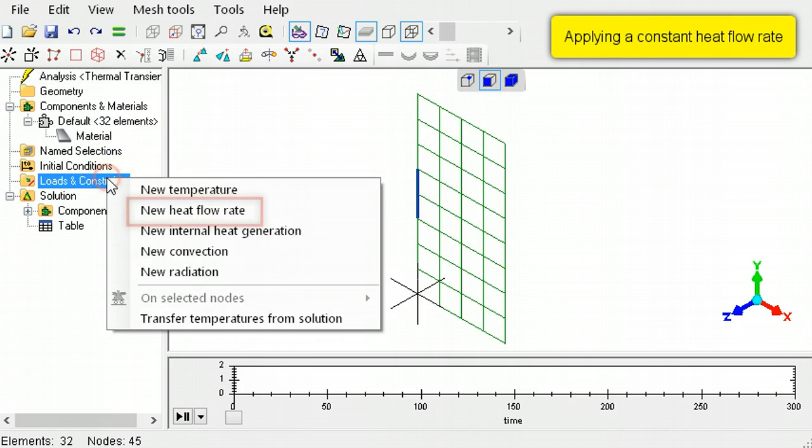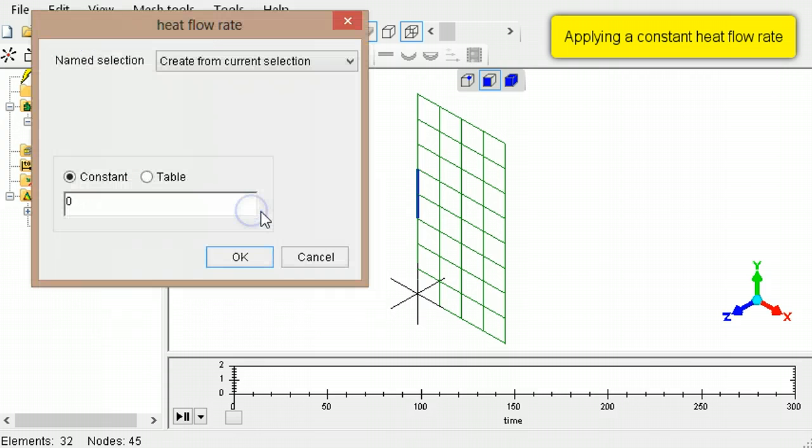The edge is now selected. Right click loads and constraints, then select new heat flow rate. If the heat flow rate is constant over the duration of this transient analysis, accept the default constant selection and type the value for the heat flow rate.